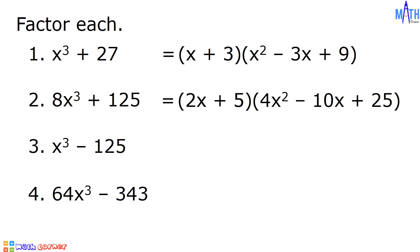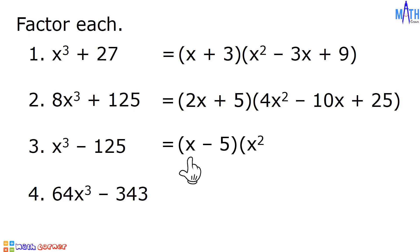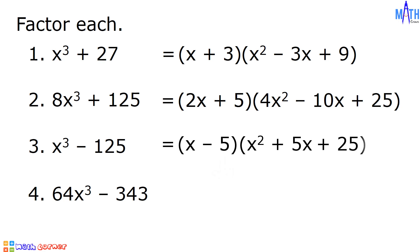For Number 3, let us factor x cubed minus 125. For the binomial factor, the cube root of x cubed is equal to x and the cube root of 125 is equal to 5, so we have x minus 5. For the trinomial factor, x times x is equal to x squared. The opposite of x times negative 5 is equal to positive 5x. Negative 5 times negative 5 is equal to positive 25. Therefore, x cubed minus 125 is equal to quantity x minus 5 times quantity x squared plus 5x plus 25.